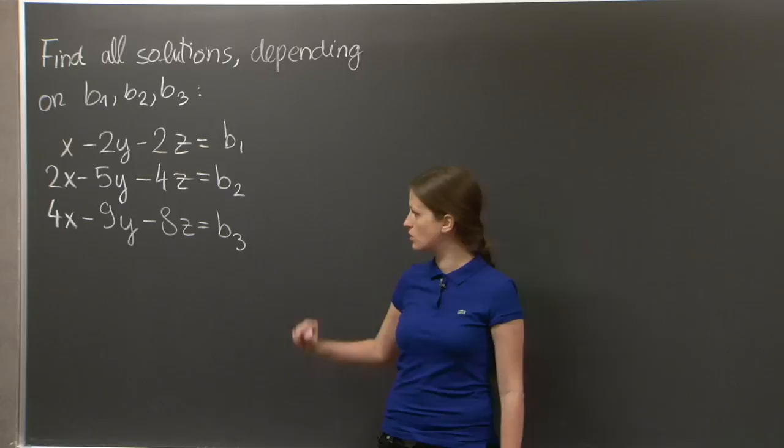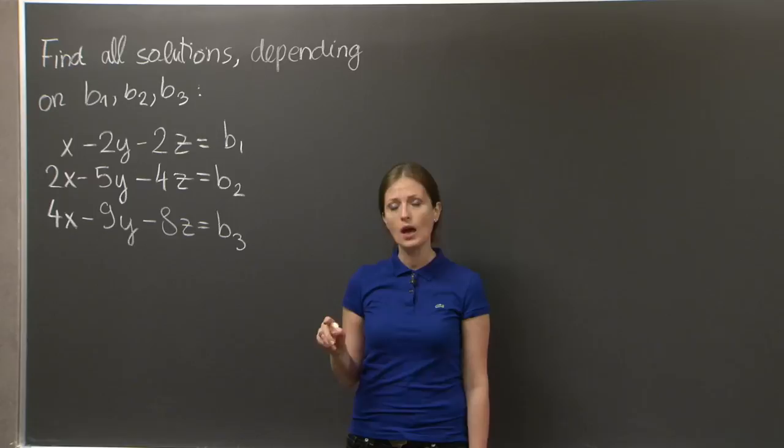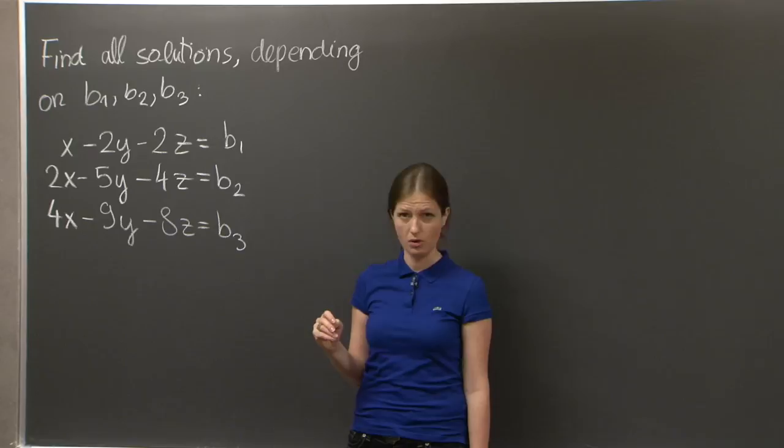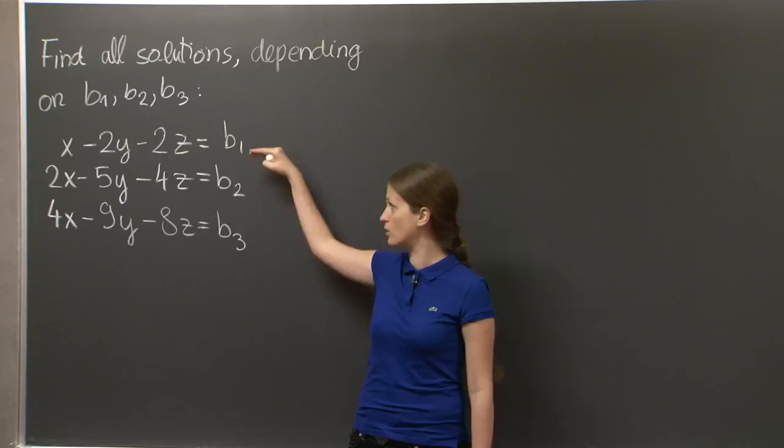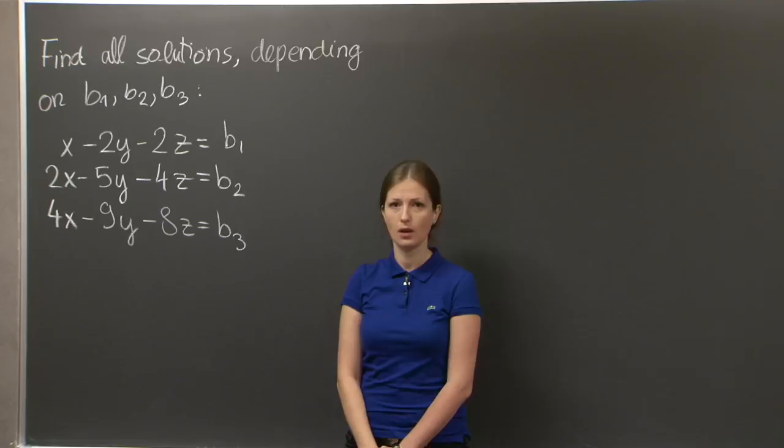As you can see, the system doesn't only have numbers and unknowns. It also has parameters b1, b2, and b3. The solution will depend on these parameters, and the existence of the solution will depend on these parameters. We're asked to find the solution and when it exists, depending on the values of b1, b2, and b3.